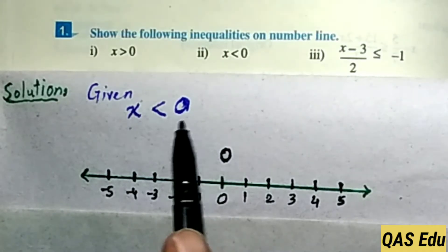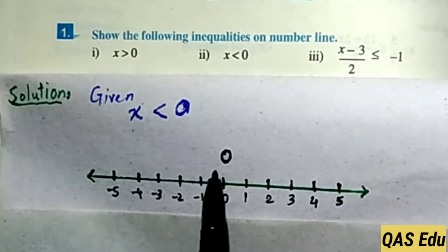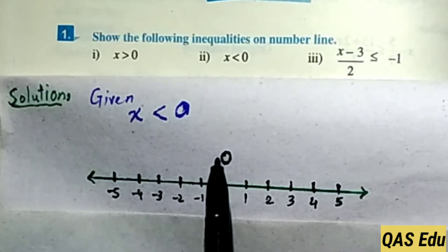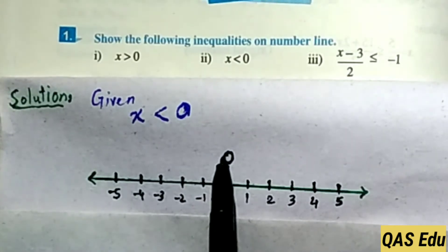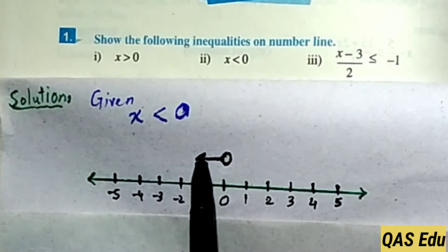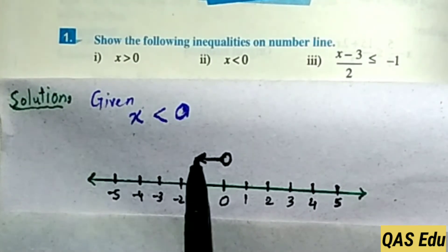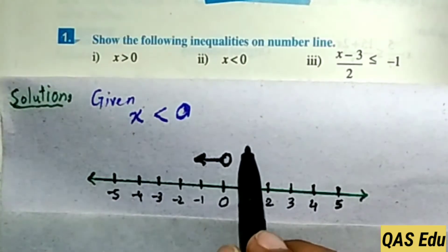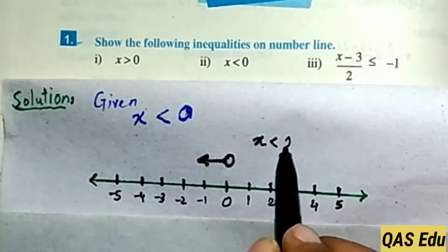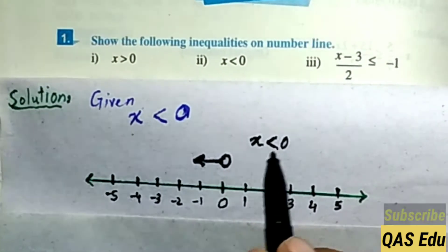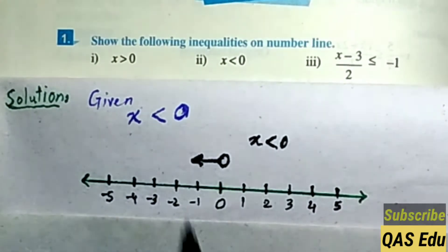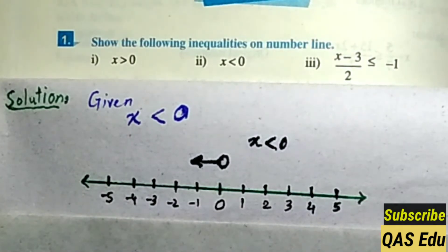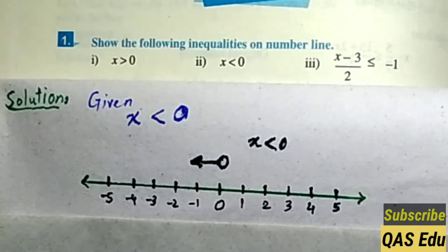Less than 0 means numbers less than 0: minus 1, minus 2, minus 3, minus 4, and so on — no limit in that direction. The notation is x is less than 0, meaning x is less than 0. Show this on the number line with an arrow pointing left.